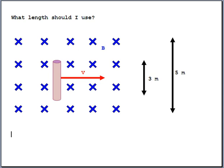Let's say you're doing a physics question and there's a room five meters across, full of magnetic field, and there's a three-meter bar moving across those X's. It's definitely cutting across the X's, so it's going to generate a voltage. But which length do you use for BLV? I would use the three. It's great that you've got a wide room, but you have to have magnetic field, movement, and a bar — and there's only a bar that's three meters long, so I would use three.